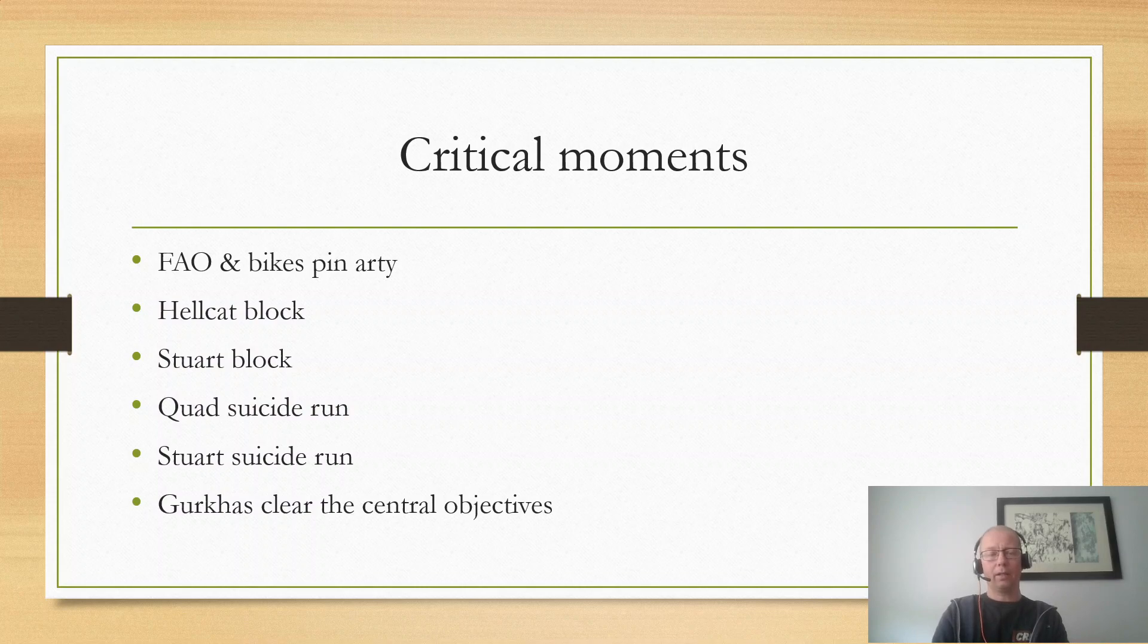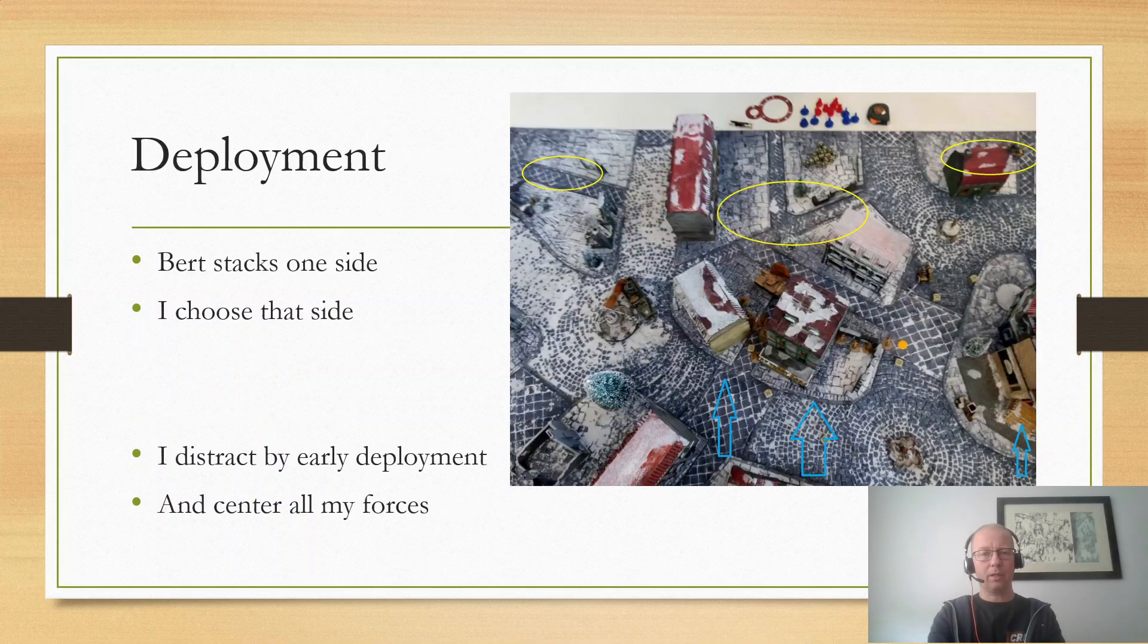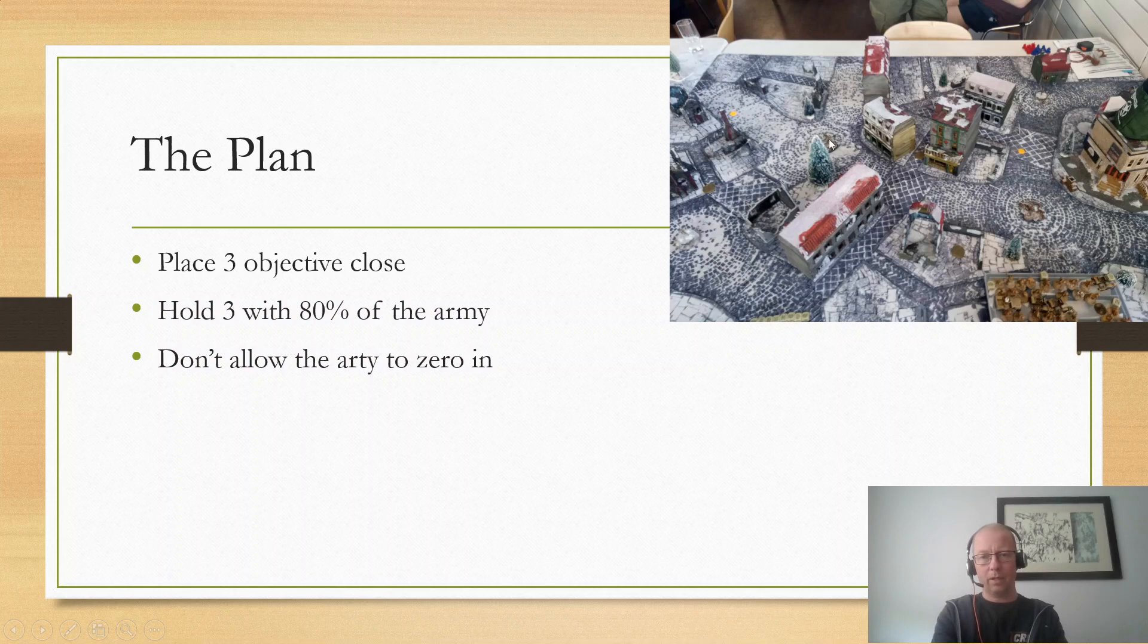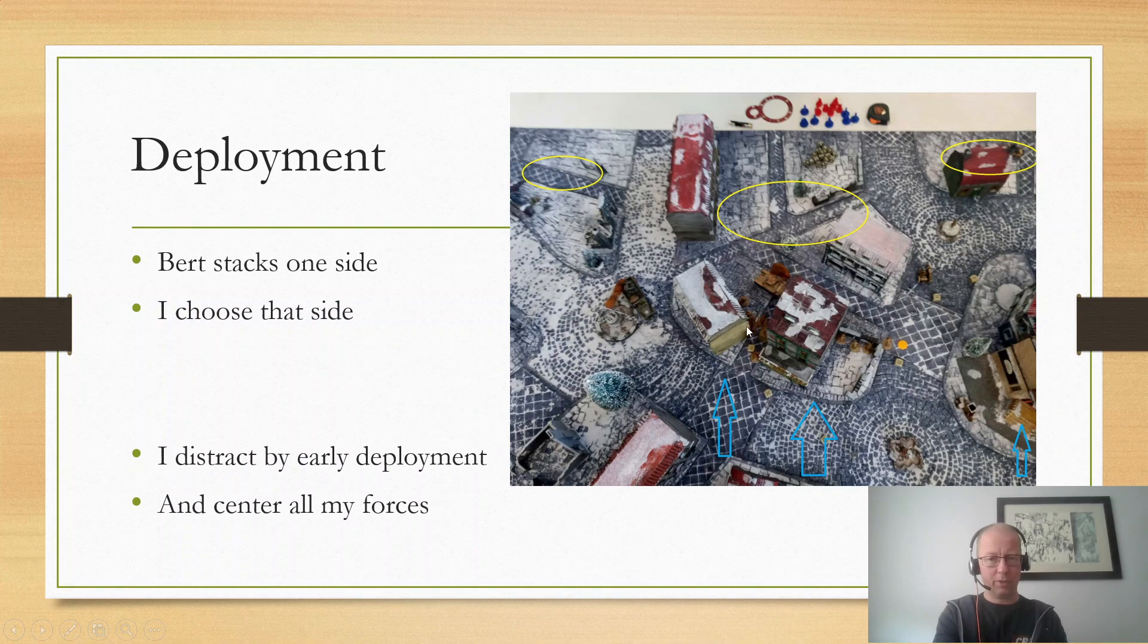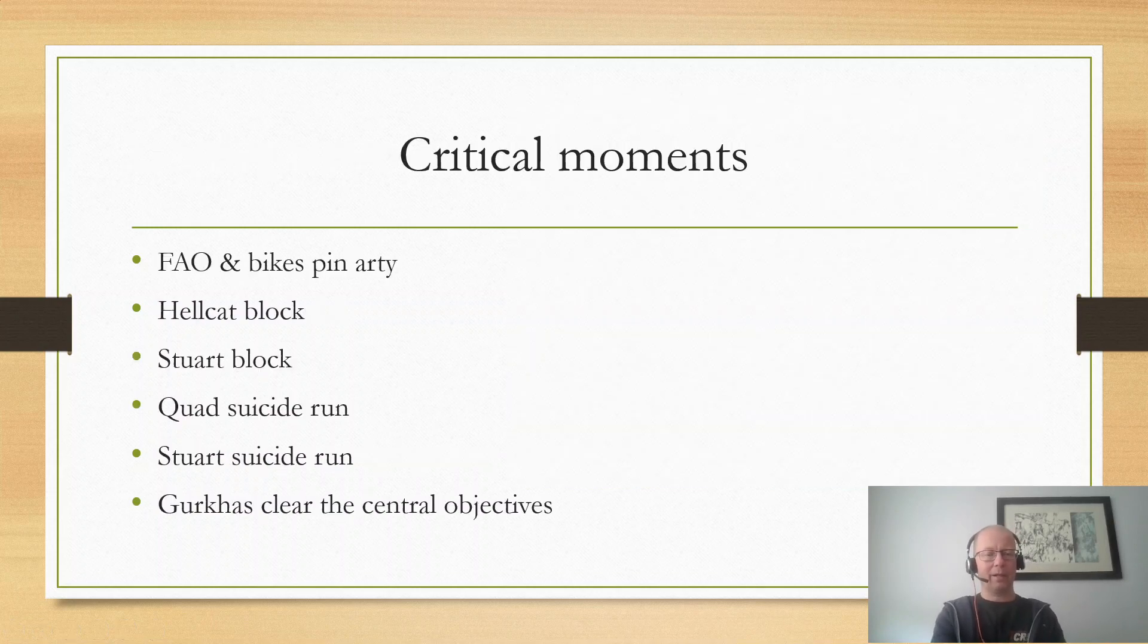The Hellcat - he tries to put up his Hellcat. It comes in from reserve all the way up here, has a nice shot down the line. He tries to block me by using that, but it doesn't really work because he's not on ambush, which means I can at one point push my Dingo from this line of sight block area to this line of sight block area. So that didn't work.